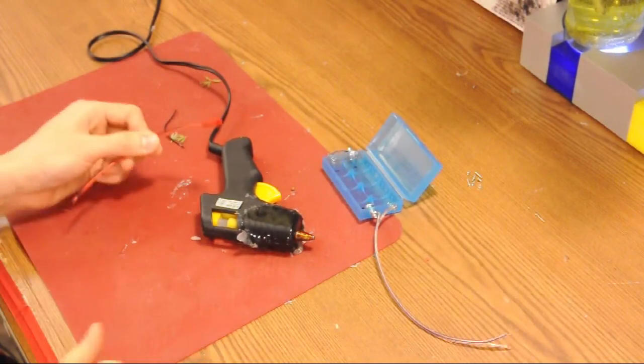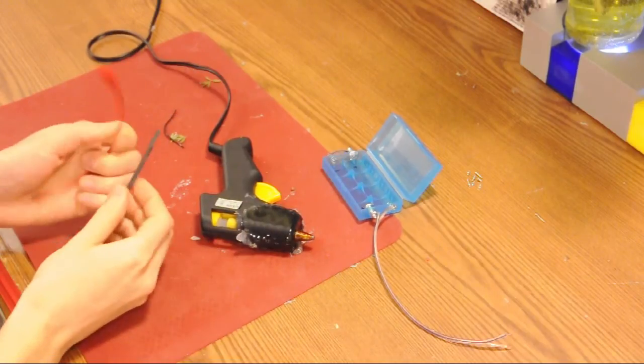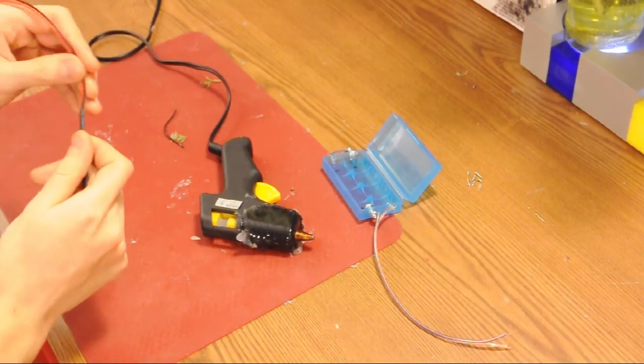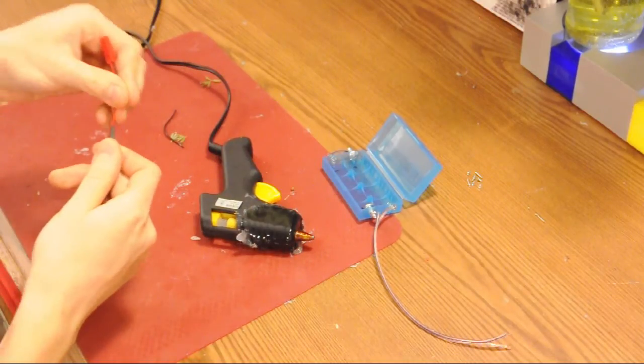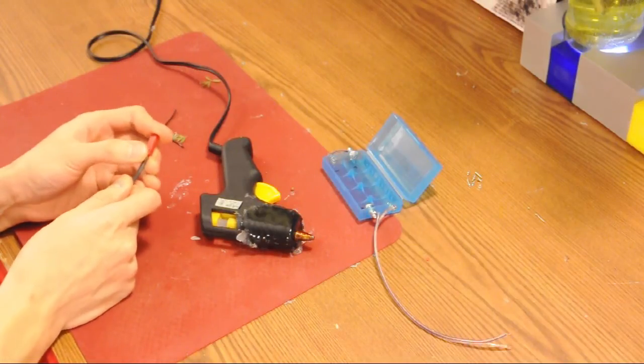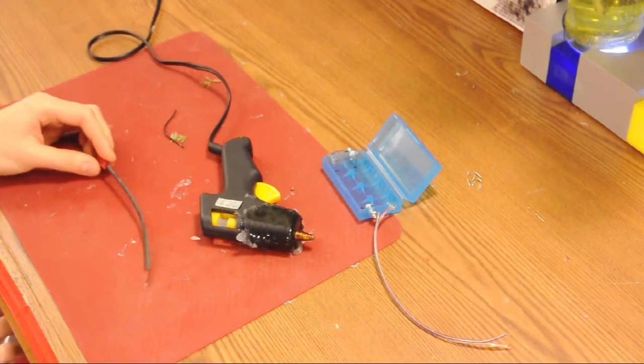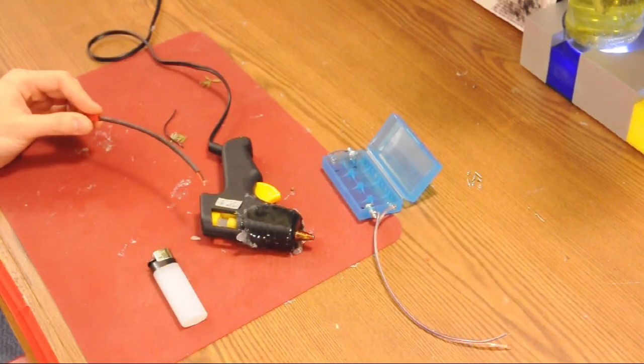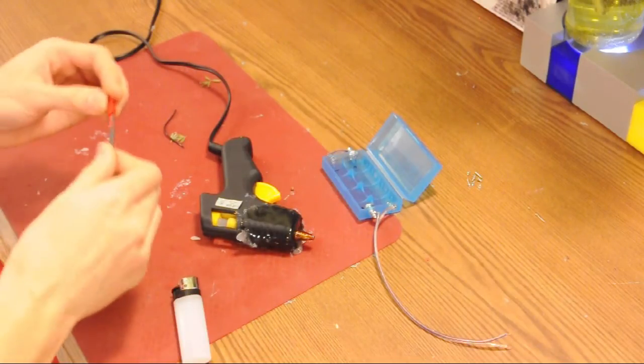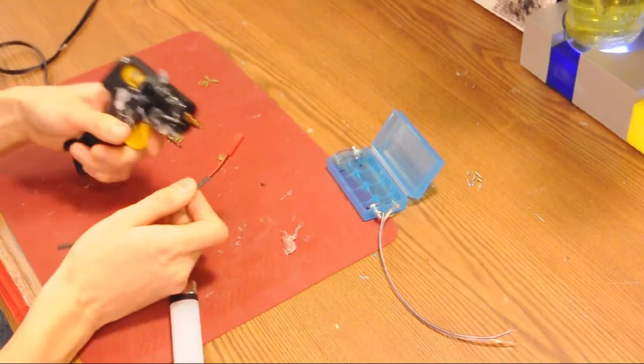We're going to take our connector and some heat shrink as well. The heat shrink, as the name implies, shrinks when you apply heat. You can use a hot air gun or a hair dryer. If you have neither of those, you can use a lighter or really any source of heat.